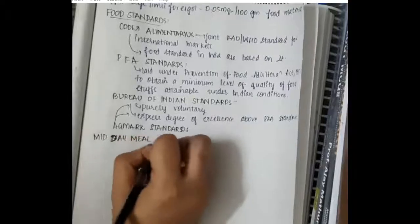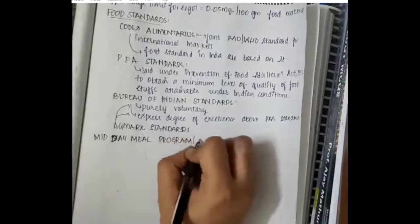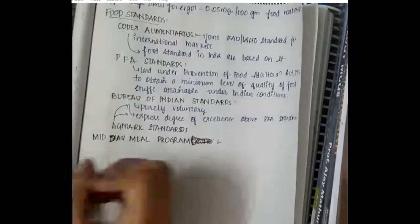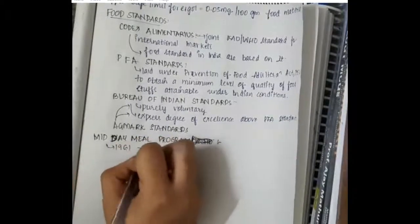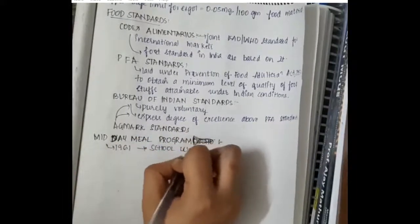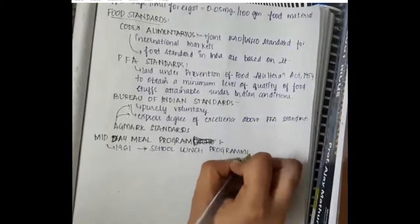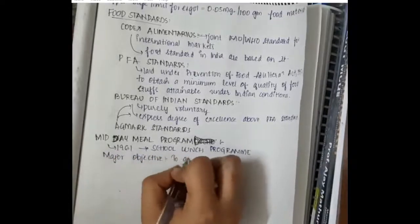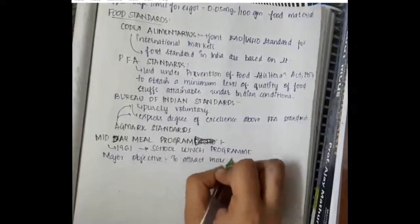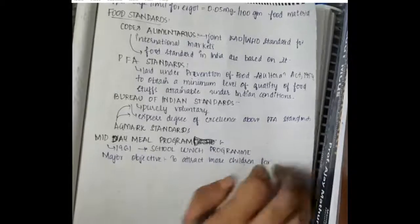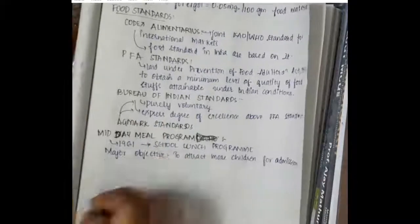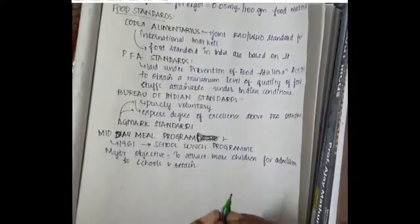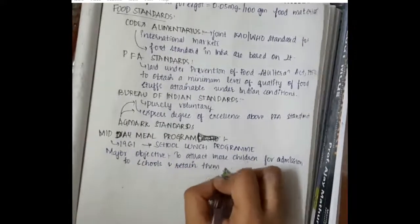Hello friends, let us now learn some important points about Midday Meal Program. The Midday Meal Program was put forward in 1961 as a school lunch program. The main objective is to attract more children for admission to schools in order to maintain proper literacy rate and literacy improvement in children.